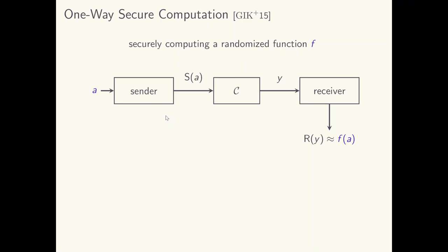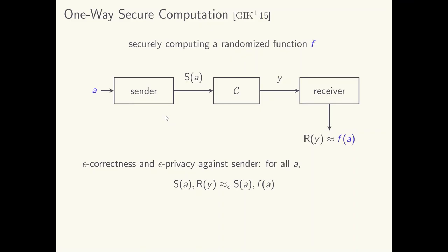The protocol for One-Way Secure Computation has a simple structure. The sender encodes the input using an encoder S and sends it to the receiver, possibly making multiple uses of the channel. The receiver decodes the channel's output using a decoder R to compute a potential output. Correctness requires that the receiver's output distribution is close to the distribution F. Security against the receiver requires that the receiver learns only F — this means the sender cannot simply send her input to the receiver using an error correcting code. And security against the sender requires that the sender only learns that the receiver's output is distributed according to F — so the sender cannot simply sample F herself and send it over using an error correcting code.